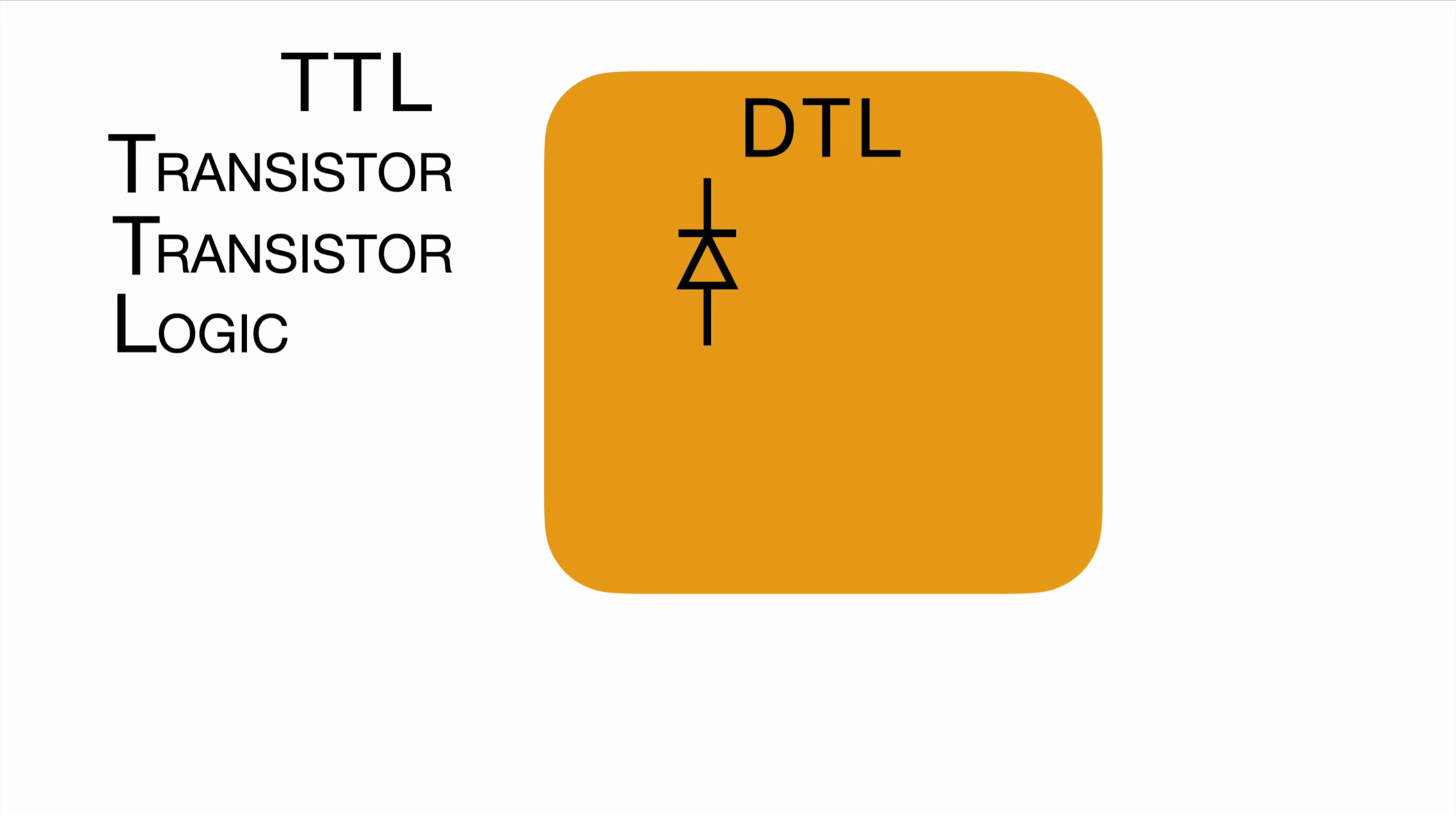DTL was basically diode transistor logic. There were two components involved: the diode and the transistor, and the diode was basically there to do the logic.